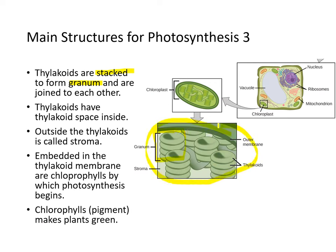A whole bunch of grana makes up the grana system. The thylakoids have thylakoid space inside. Outside the thylakoids is called the stroma. Embedded in the thylakoid membrane are the chlorophylls, which photosynthesis uses. The chlorophyll pigments are what makes plants green.